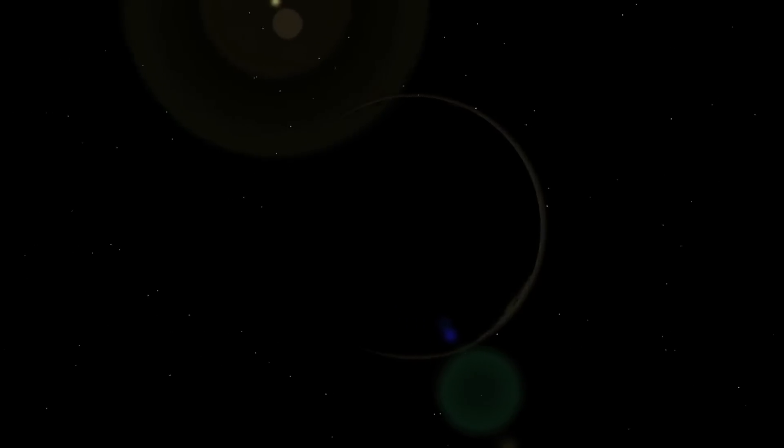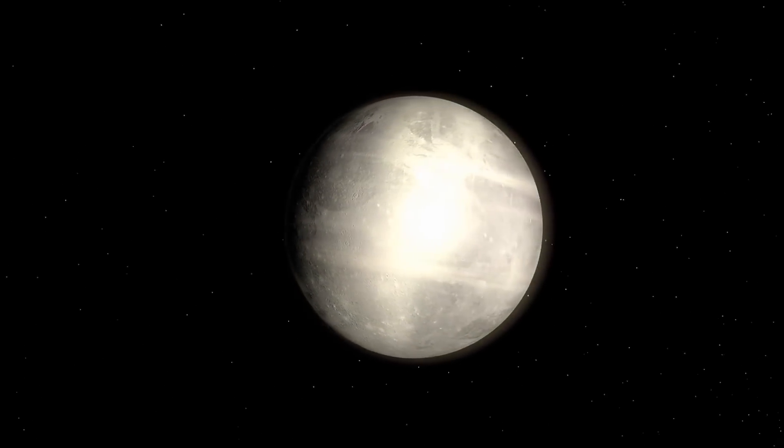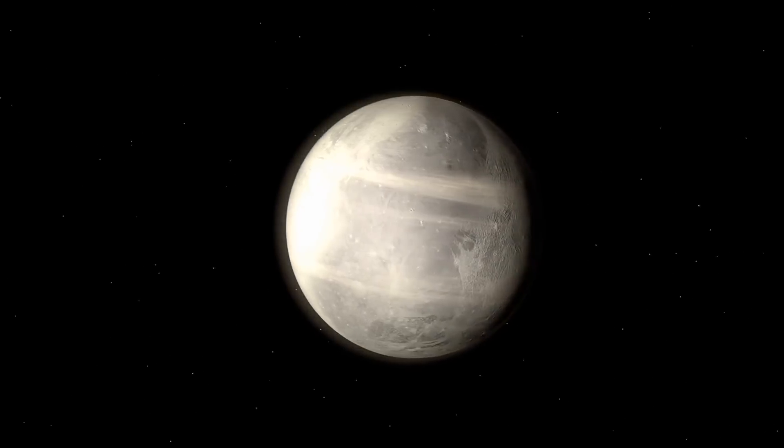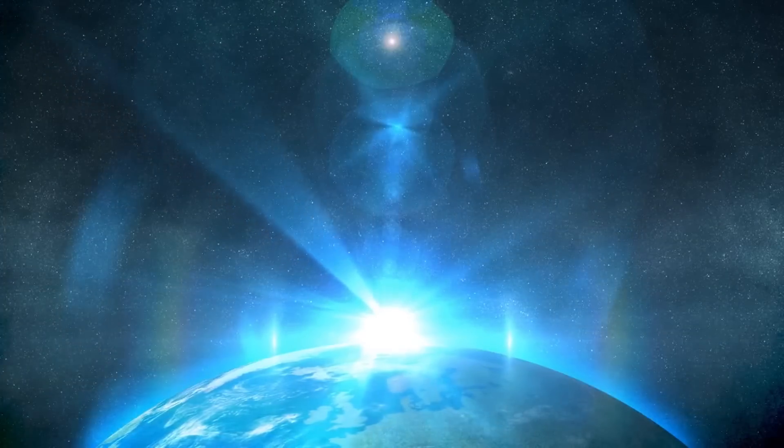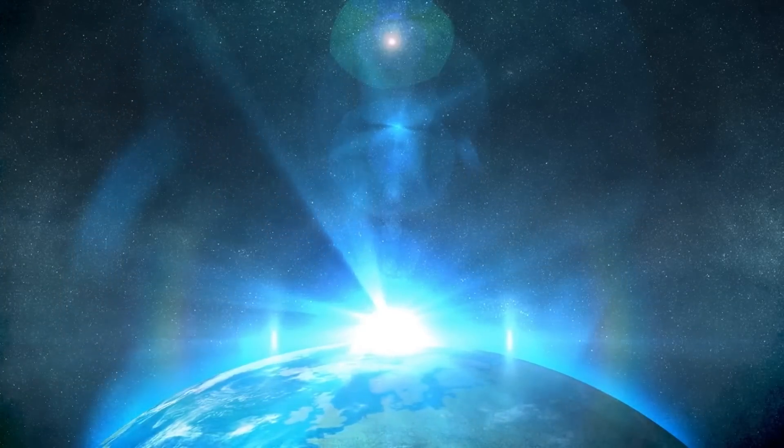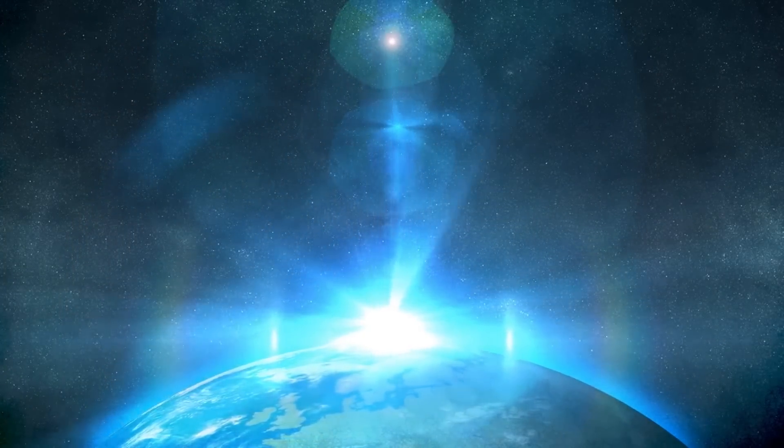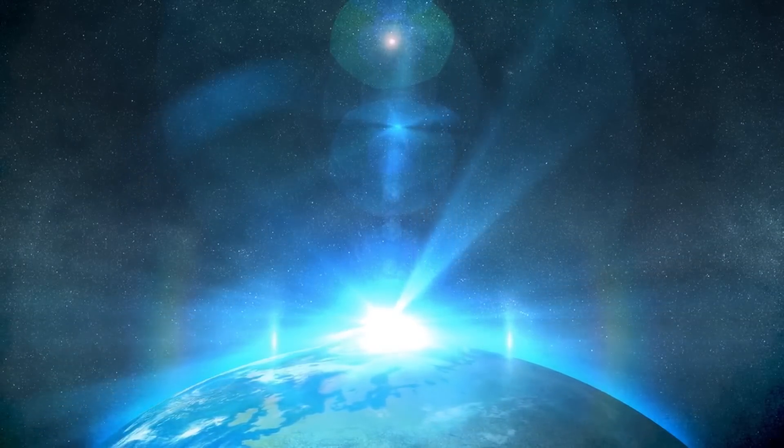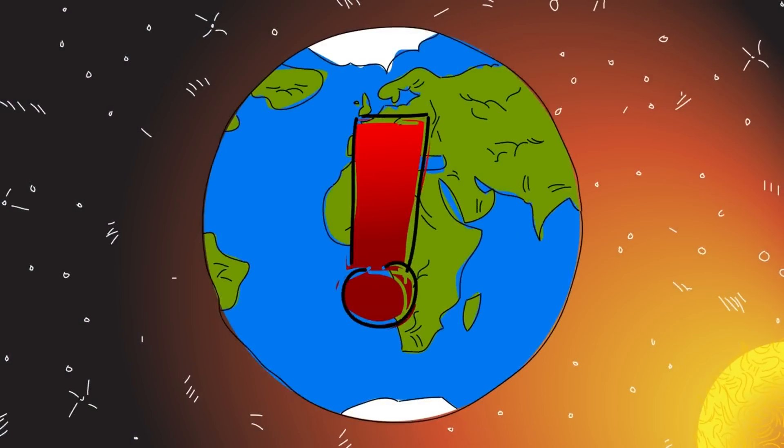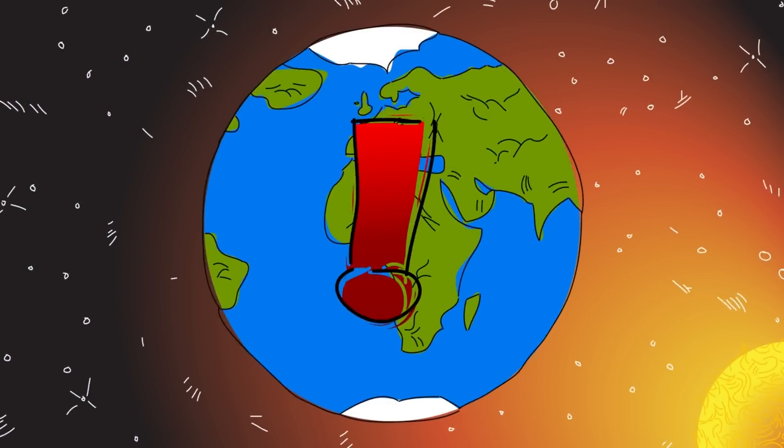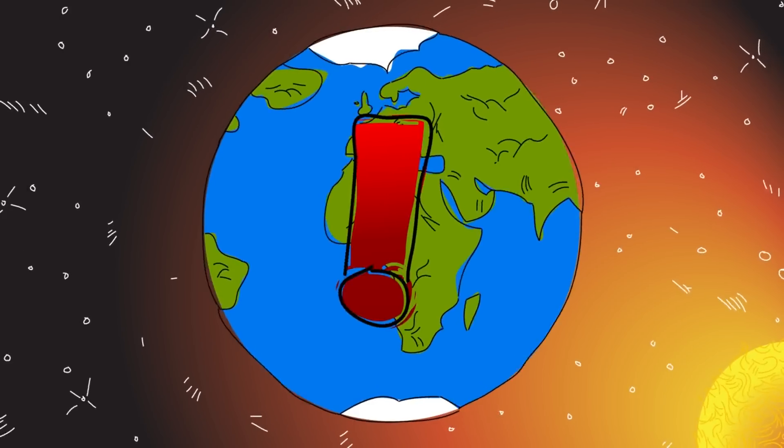The data and images sent back by Voyager 1 over the past four decades have not only expanded our understanding of the solar system but have also provided a new perspective on our place in the universe. The famous Pale Blue Dot image, taken by Voyager 1 in 1990 from a distance of about 6 billion kilometers, shows Earth as a tiny speck of light, barely visible against the vastness of space. This image has become an enduring symbol of the fragility and uniqueness of our planet, a reminder that Earth is just one small part of a much larger universe.